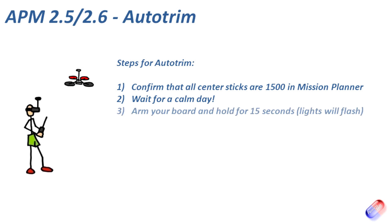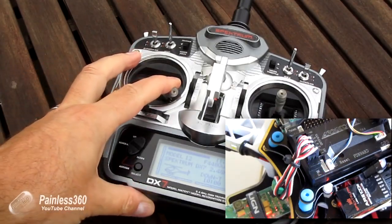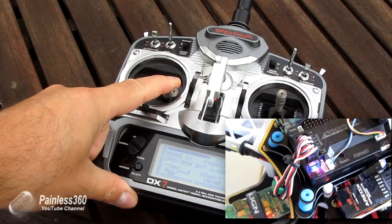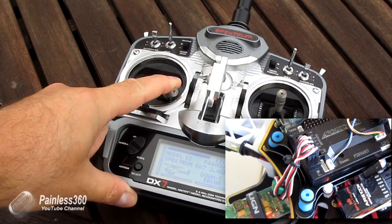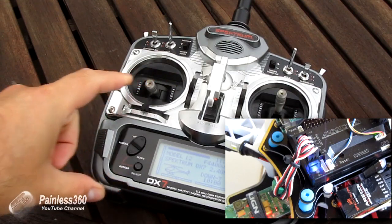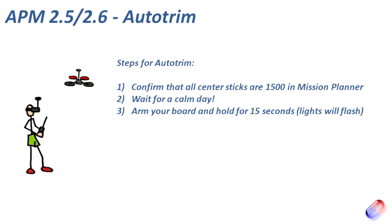Next, arm your board and hold the arming position on the transmitter for 15 seconds. Here you can see the control board and the transmitter — I'm holding the sticks and once I've gone past about 5 seconds you'll see the board arm normally, the red light going solid to say it's ready to fly. Continuing to hold the sticks, and then when I release them you've got these pulsing lights. These pulsing lights mean we're ready for auto trim, so just hold that arming position for more than 15 seconds.